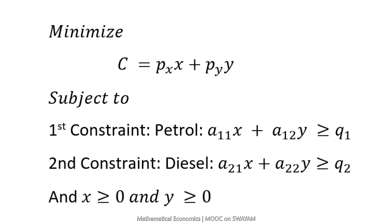Here, C is the cost. PX and PY are the prices of crude oil X and Y respectively. A11, A12, A21, and A22 are the output per unit of X and Y, and Q1 and Q2 are the minimum output demanded.